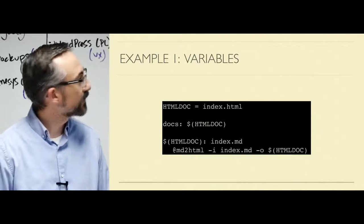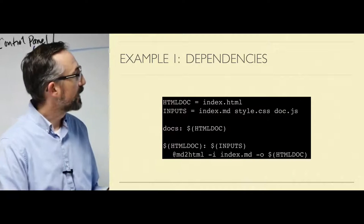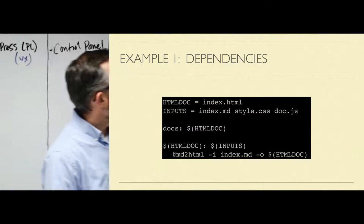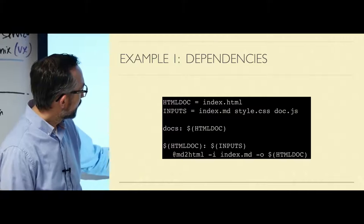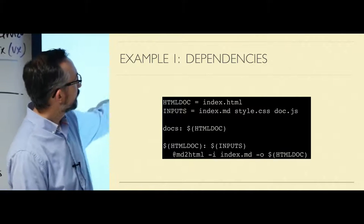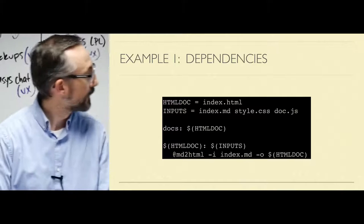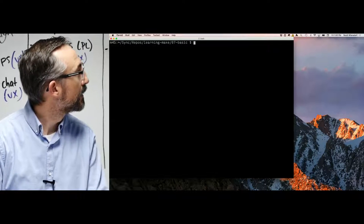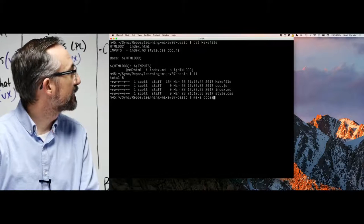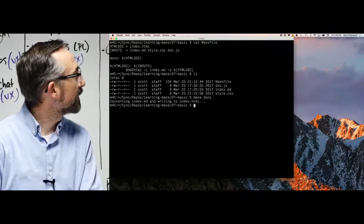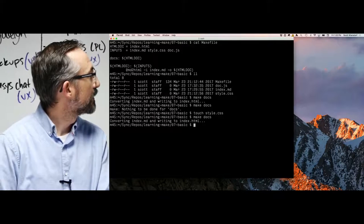We can improve this a little further. Let's pretend we want to rebuild the document whenever any of those other files change. We've got index.md, of course, but maybe we've got a stylesheet and maybe a little JavaScript file. We've declared our variable here and a new variable there. Here's our standard docs target. Now instead of index.md, we're going to use 'inputs.' When any of these three files change, this will be considered out of date. I've got a doc.js, index.md, and style.css. Make docs — we did that. Make docs again — we're clean, nothing's done. If I touch the stylesheet, now we have to make it again because it's a dependency.